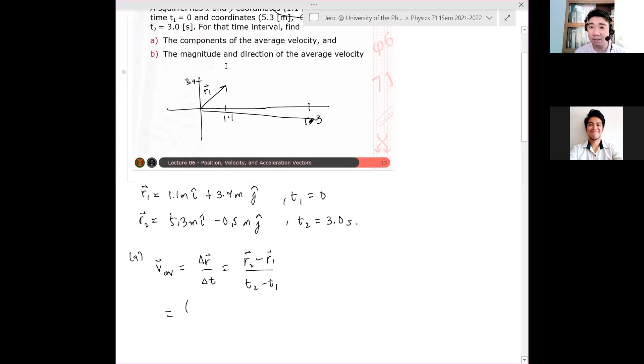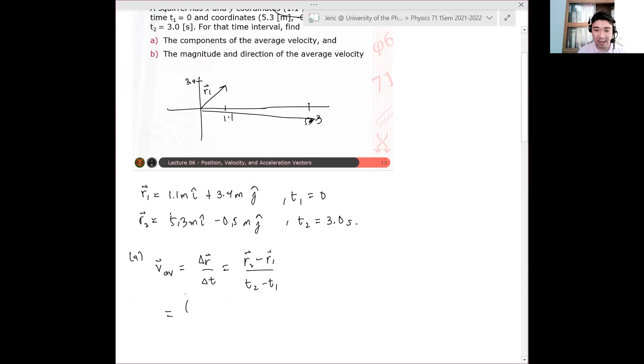And see that we have 1.1 meters i-hat plus 3.4 meters j-hat minus... Sorry. Sorry. That's wrong. That's the initial position. Sorry for that.